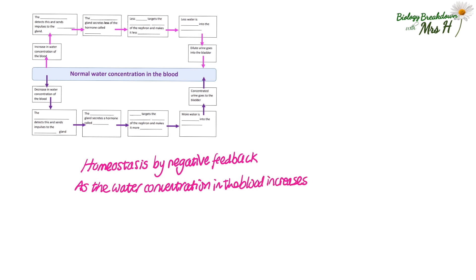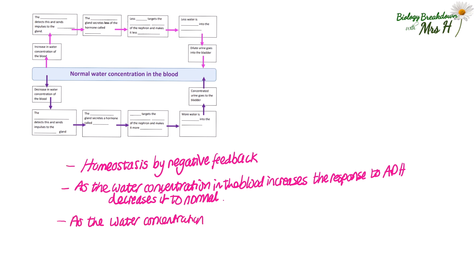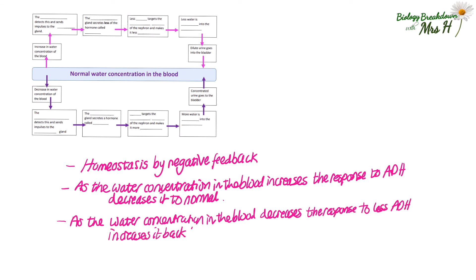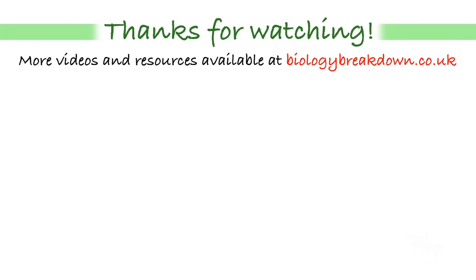This process is an example of homeostasis by negative feedback. As the water concentration in the blood increases, the response via ADH decreases it back to normal. If the water concentration in the blood decreases, the response via less ADH means that the water concentration increases back to normal again.